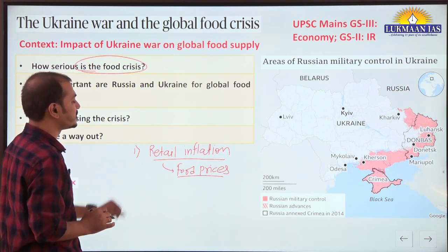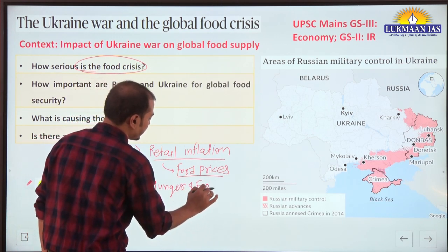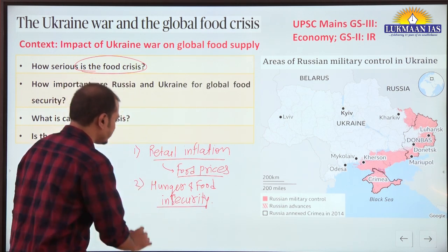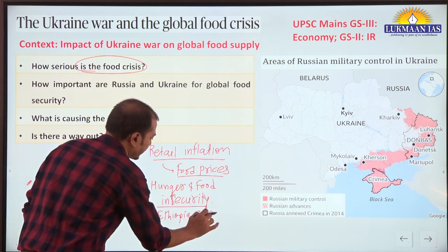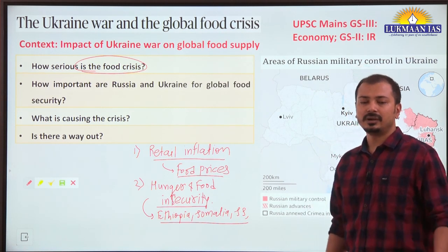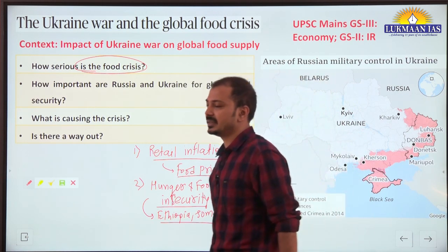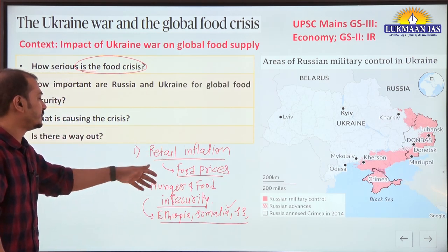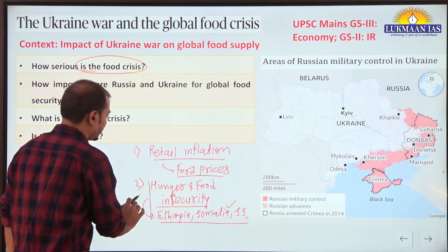All economies are facing this problem. Second, you should know the problem of hunger and food insecurity, especially in African countries like Ethiopia, Somalia, and South Sudan. These are already conflict-prone and drought-prone countries, largely dependent on imports and grants of food grains from different countries. Because of this ongoing issue, these countries may face severe hunger and food insecurity, as announced by the Food and Agriculture Organization (FAO).